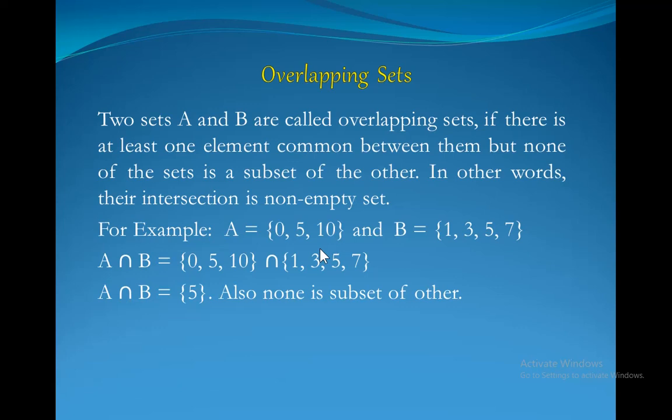And moreover we see that none of the sets is subset of the other. So these are the two conditions: Number 1, their intersection will be non-empty. Number 2, no set will be the subset of the other. Then these sets are called overlapping sets. Hope it is clear to all.